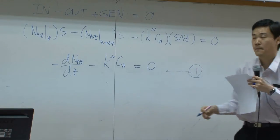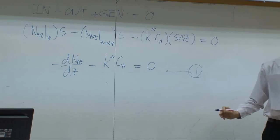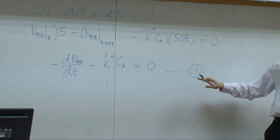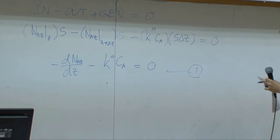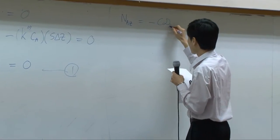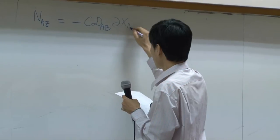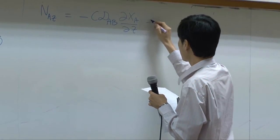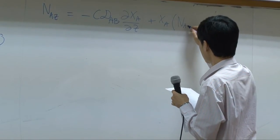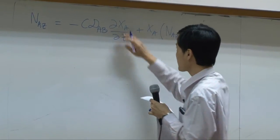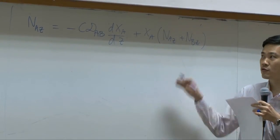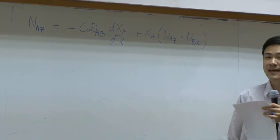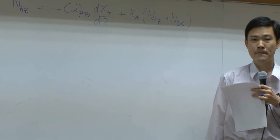Then the next step—this is the equation from shell balance—the next step is to change the flux itself into concentration. How can we do that? Normally we use this equation. Right, from the last two examples we always use this equation. Can we use this equation for this case? No. Why not?